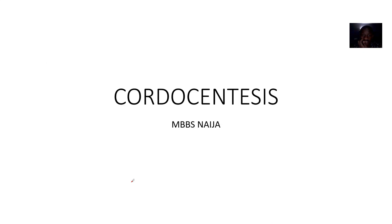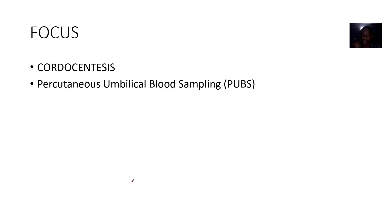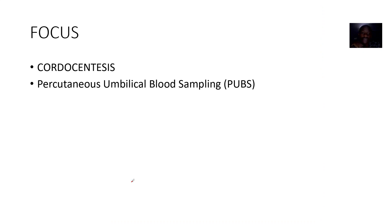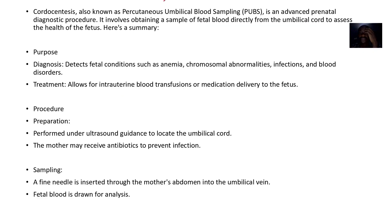Moving on to the next concept: cordocentesis. Cordocentesis is simple — we are trying to tap blood from the umbilical cord to sample it and test it in the lab. It is also known as percutaneous umbilical blood sampling. It is an advanced prenatal procedure.